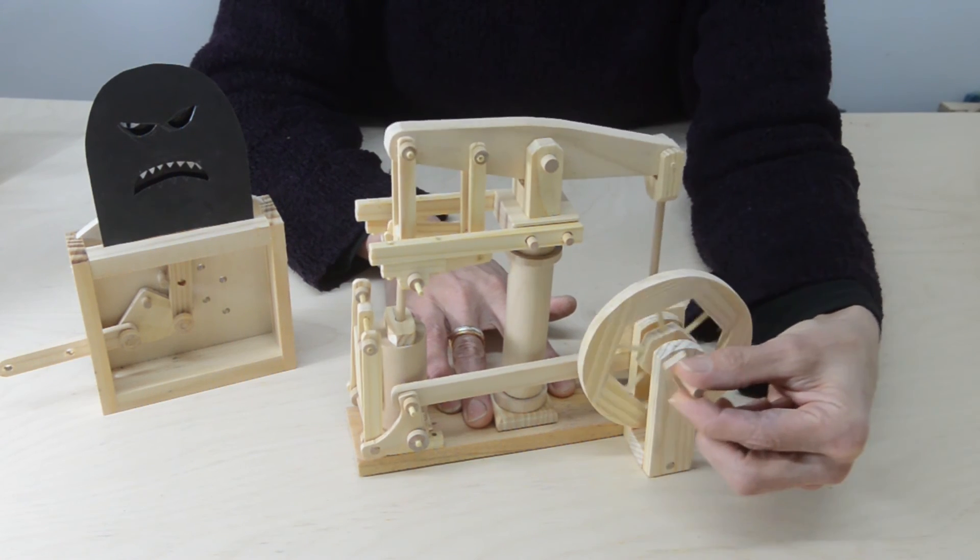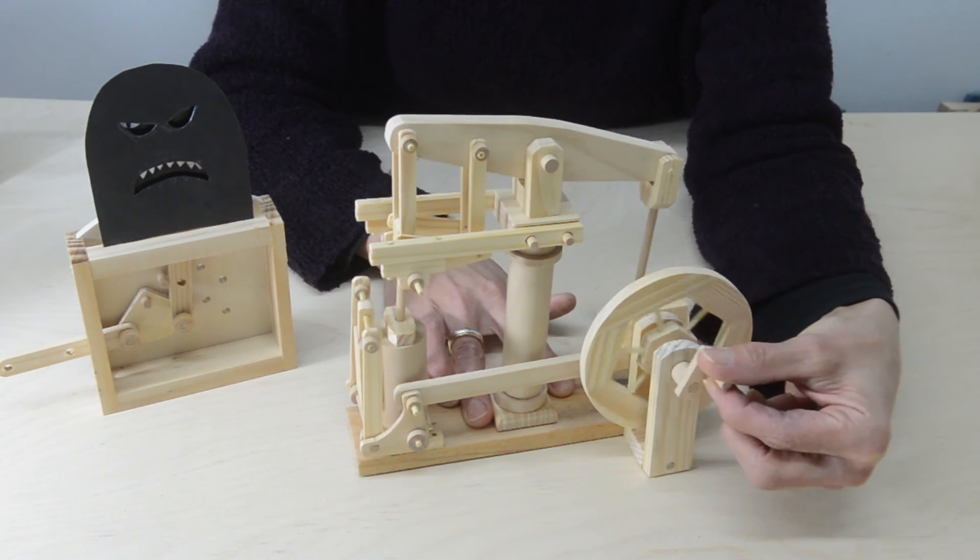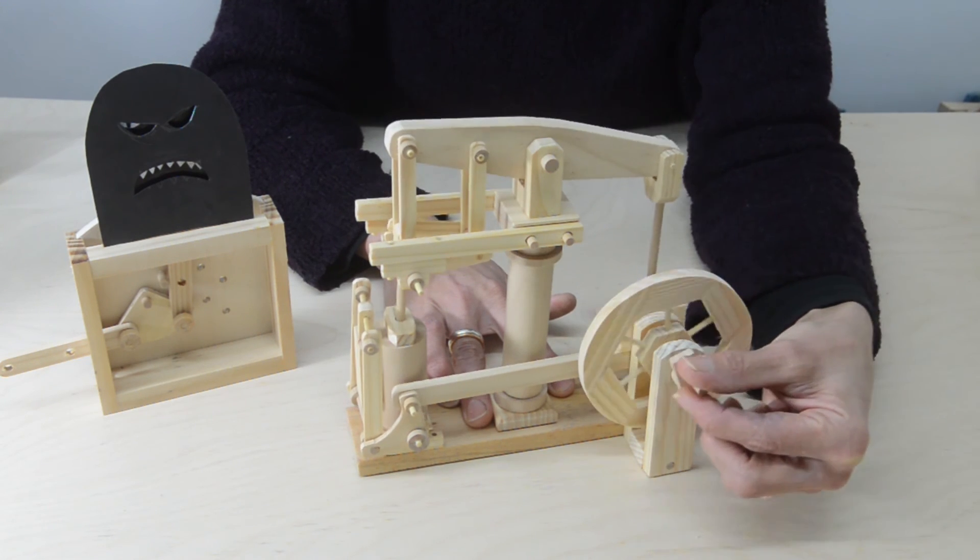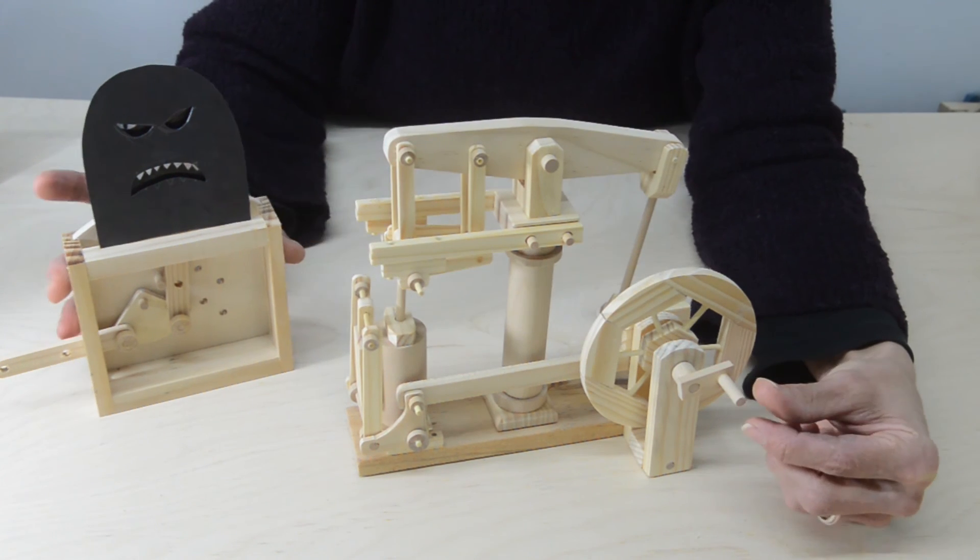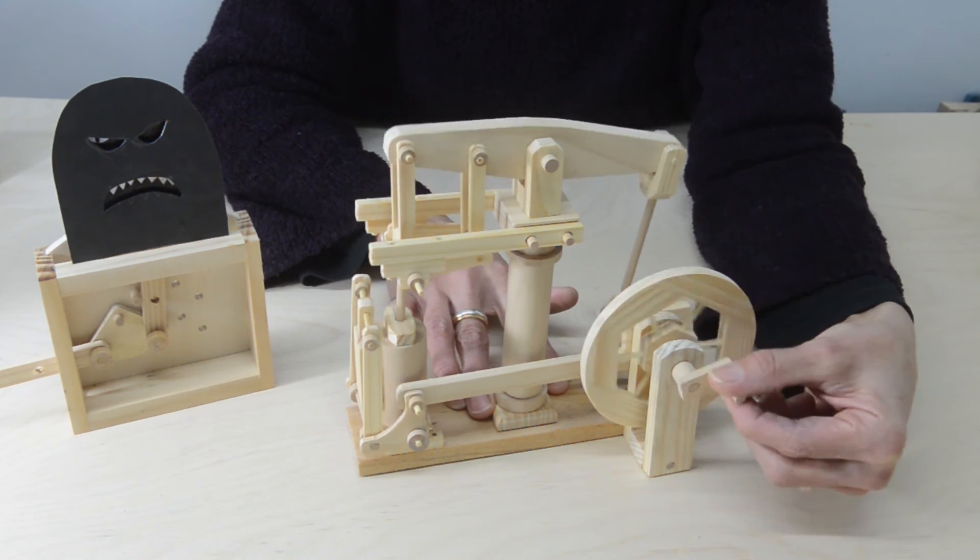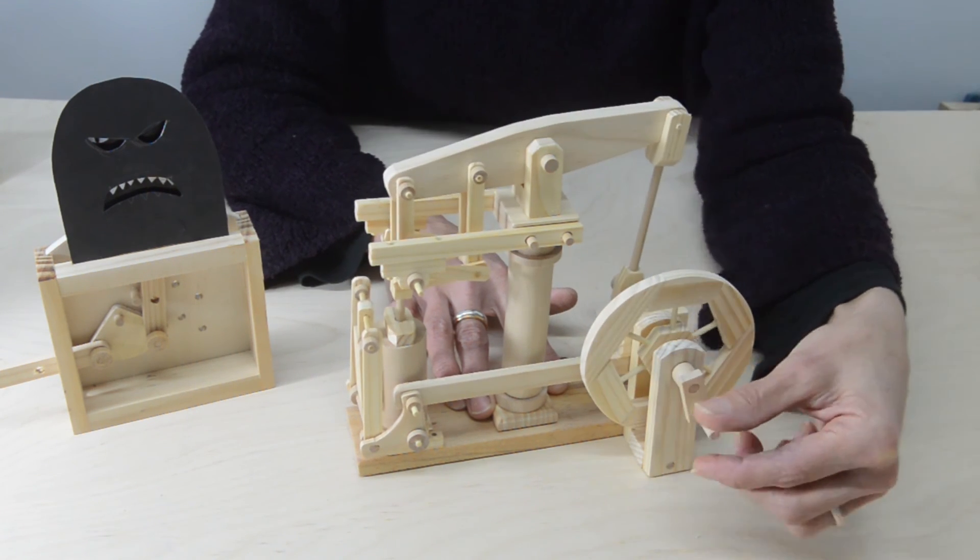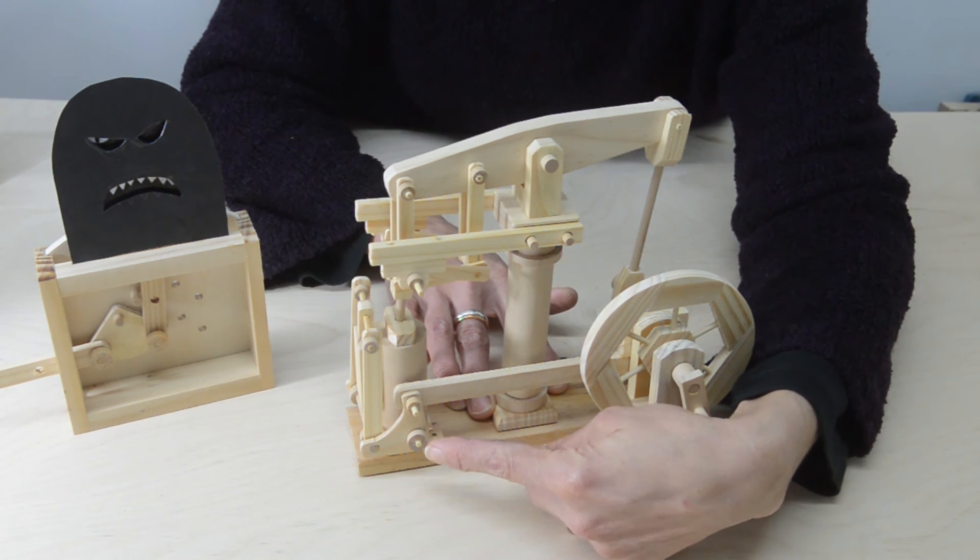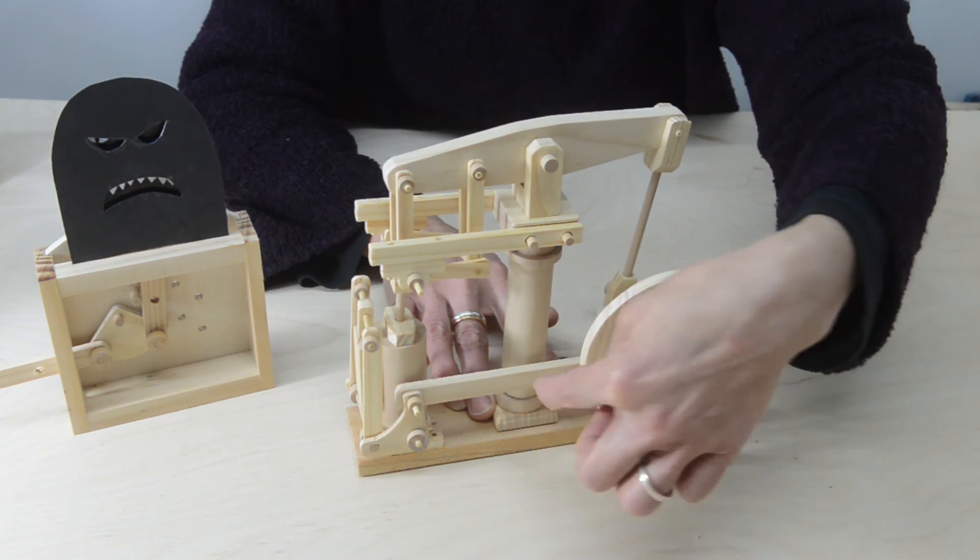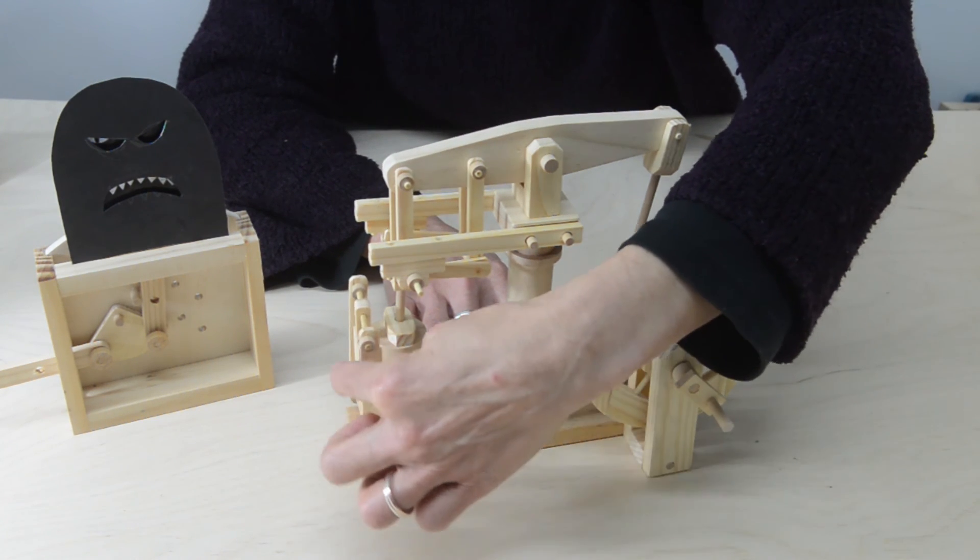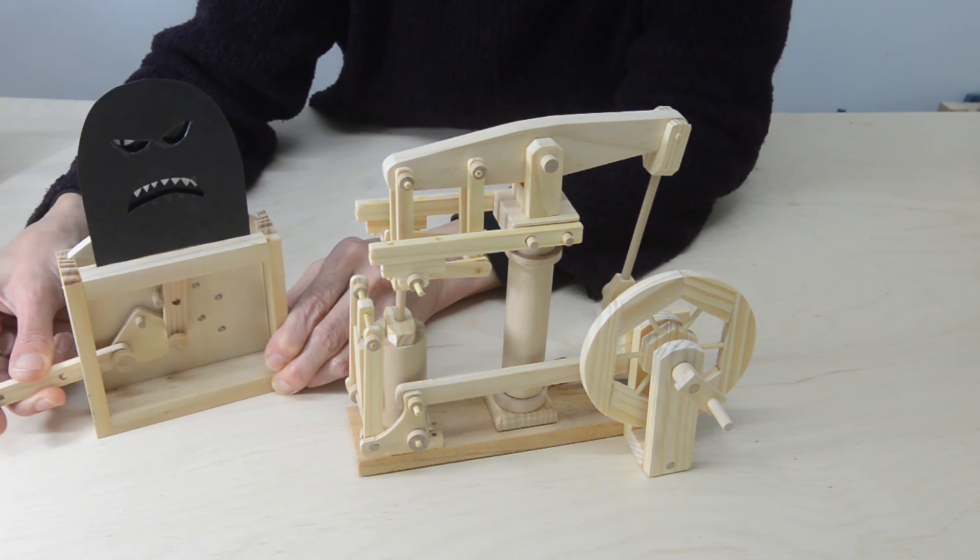This is a model of a beam engine and beam engines were often used to pump water up from underground. There are all sorts of linkages here, all doing slightly different jobs. But there's one particular linkage at the front which is very similar to our simpler model here on the left. This linkage in the corner here is called a bell crank and it works by this rod pushing across and it's pushing this mechanism up and down, just like this simple model here on the left.